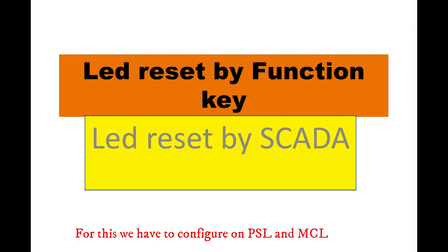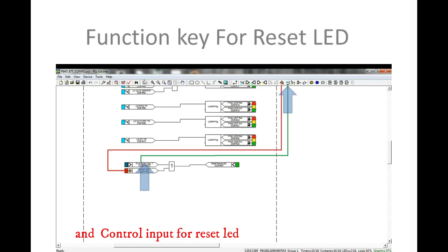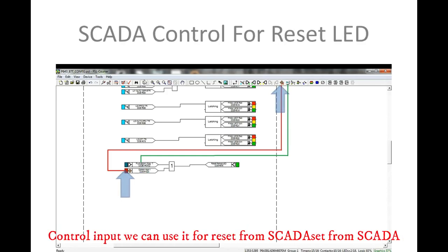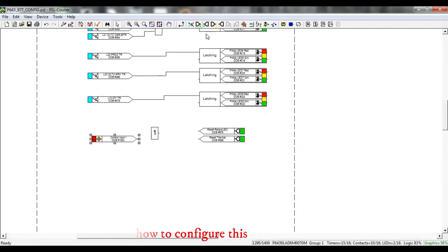For this, we have to configure on PSL and MCL. In PSL, first we have to configure for function key and control input for reset LED. Function key we can use for reset LED from relay, and control input we can use for reset from SCADA. We can see how to configure this from PSL.